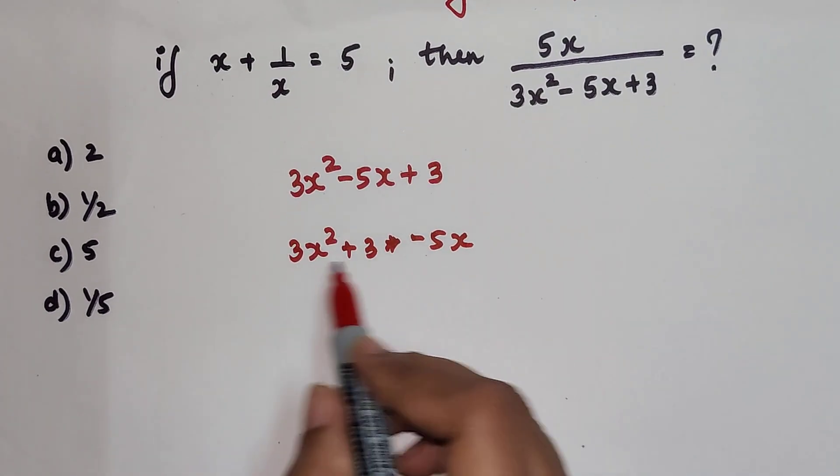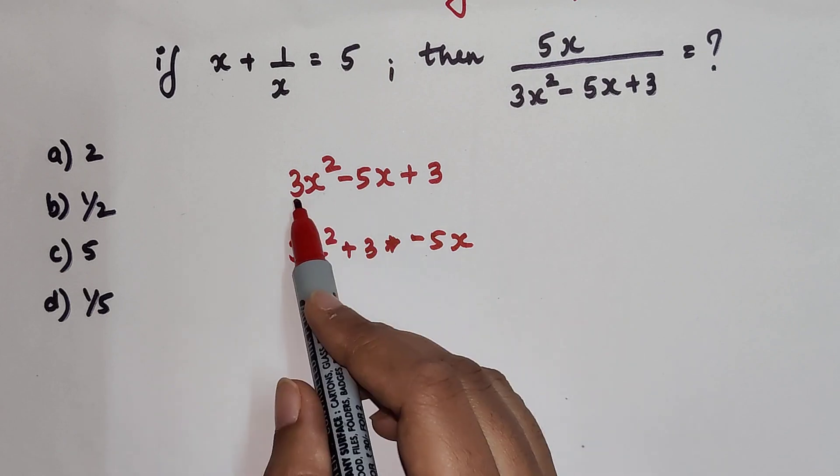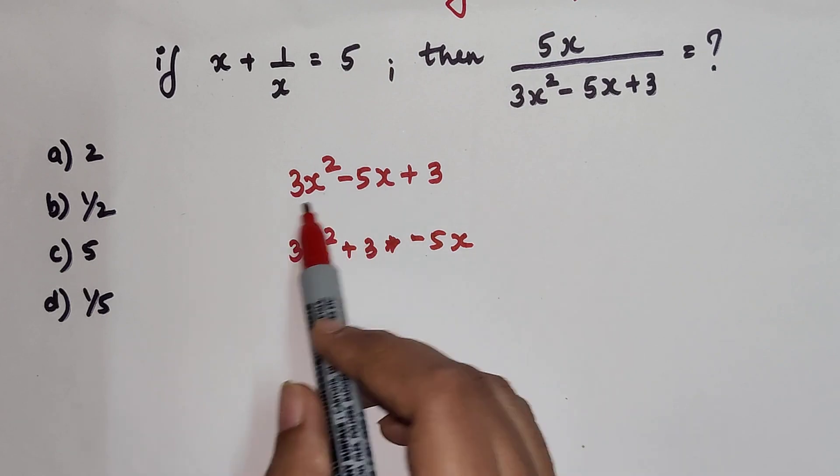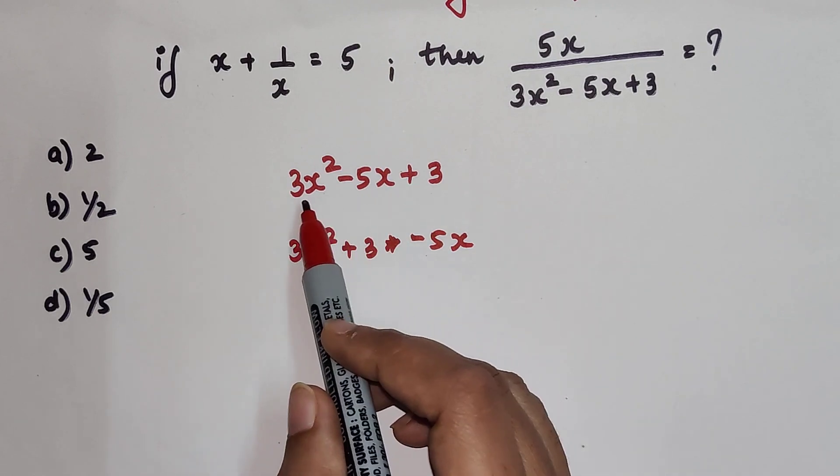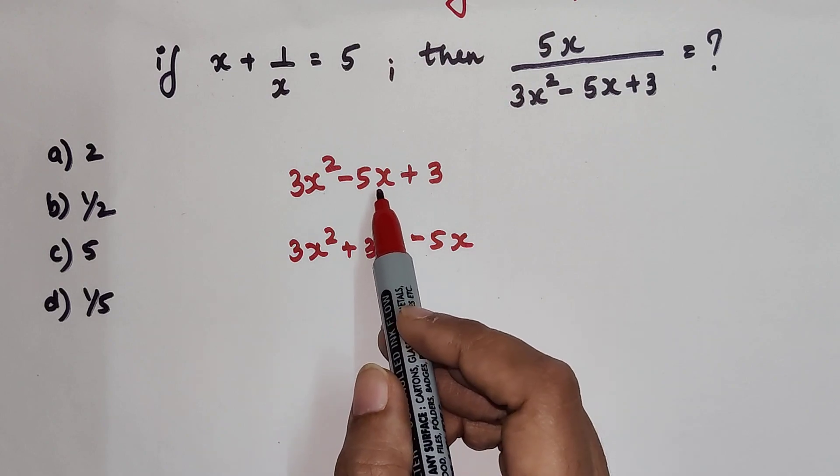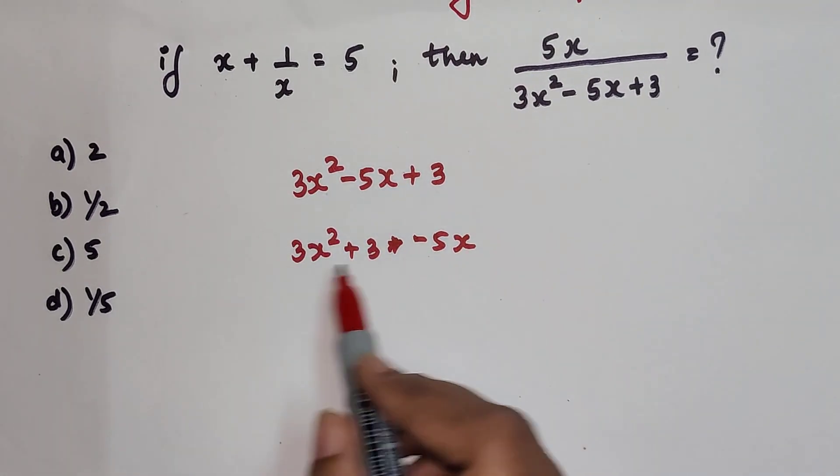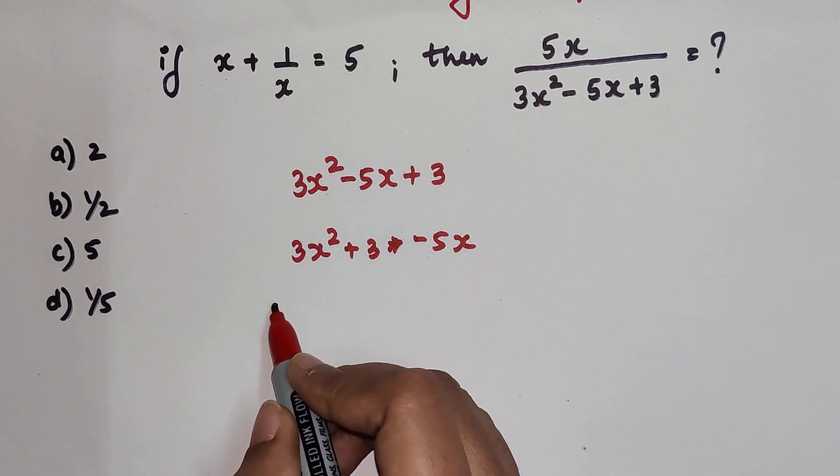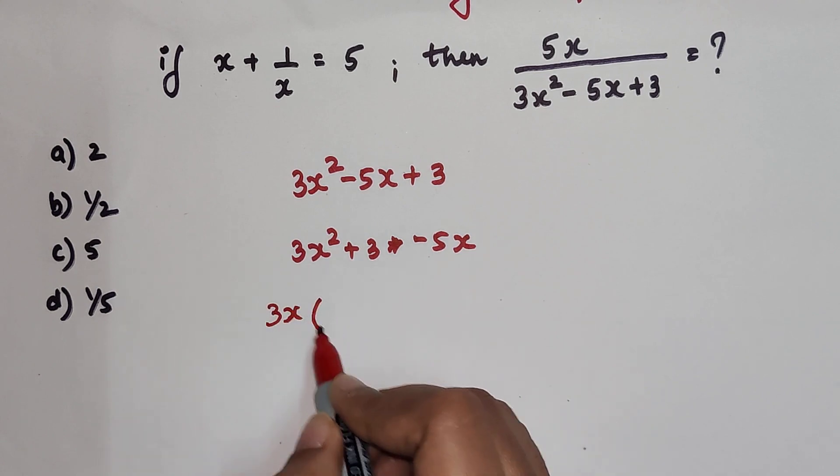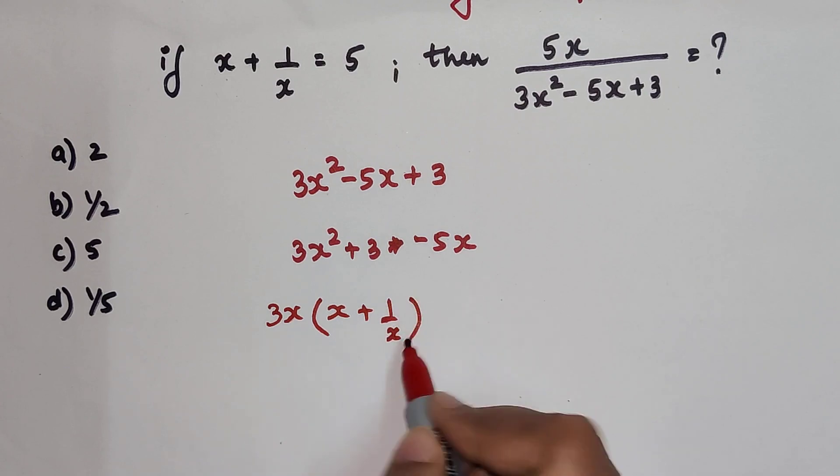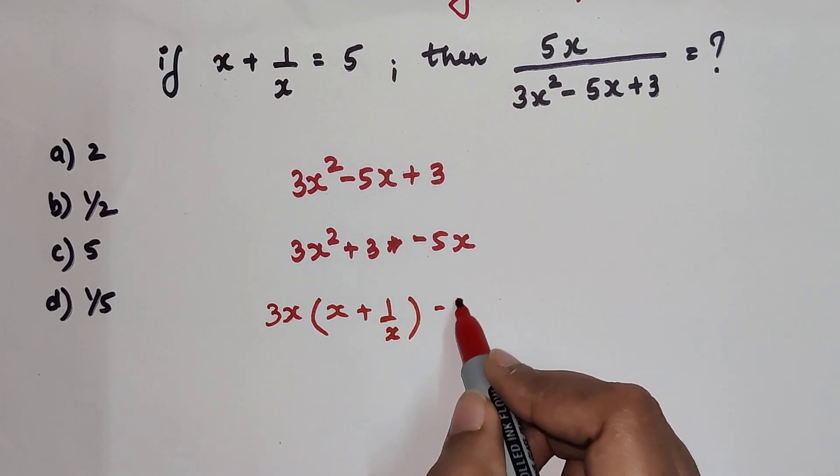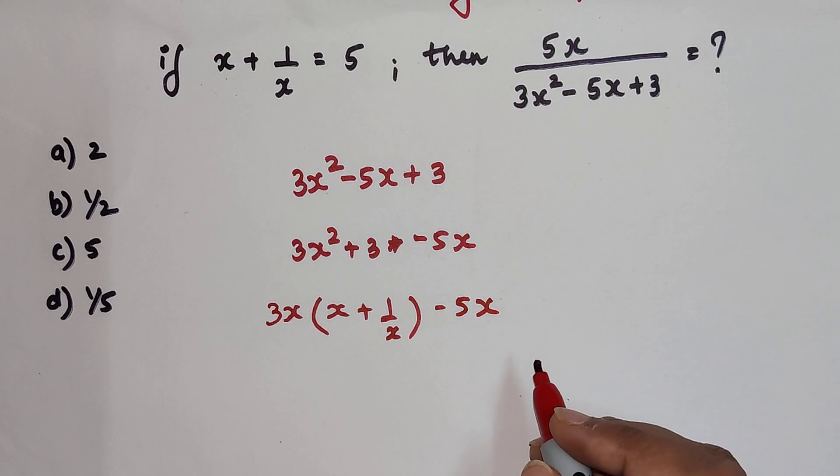Okay, so now why did I do this? Because if I take an x outside from these two terms, I am still left with 3 and minus 5, and I just want a 1 upon x in this case. So here let's take 3 outside with an x, so I get x plus 1 upon x minus 5x, right.